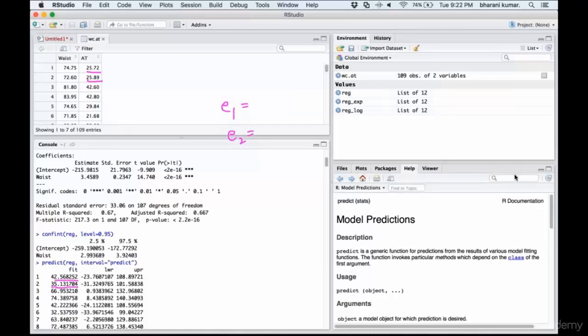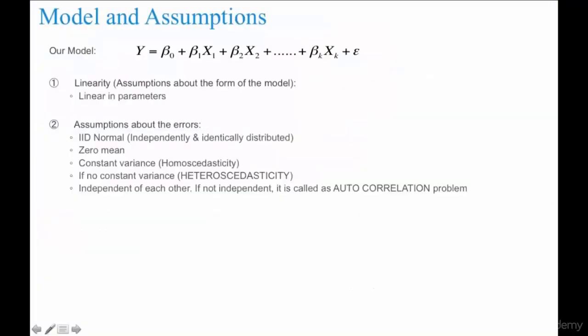There should not be any dependency between various errors. If there is a dependency, then something is going wrong. Your data collection is wrong, maybe. So if they are not independent, there is another problem that we need to deal with, which is called as autocorrelation problem.